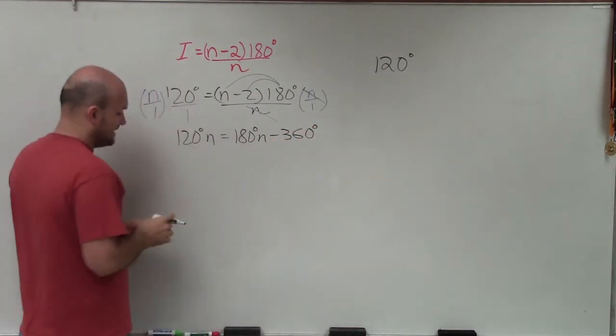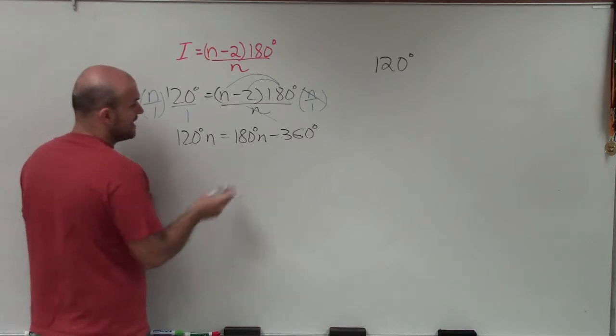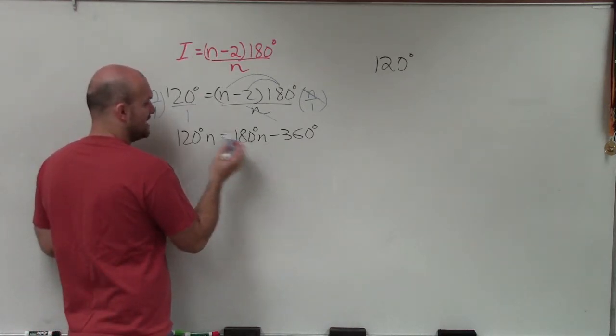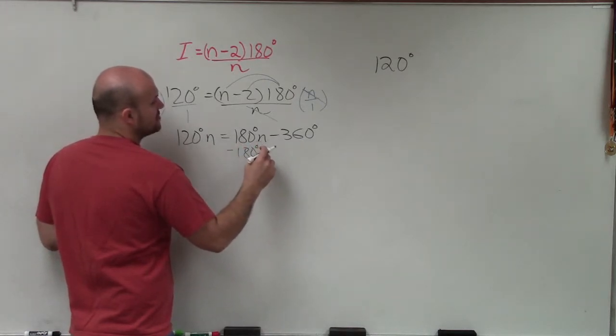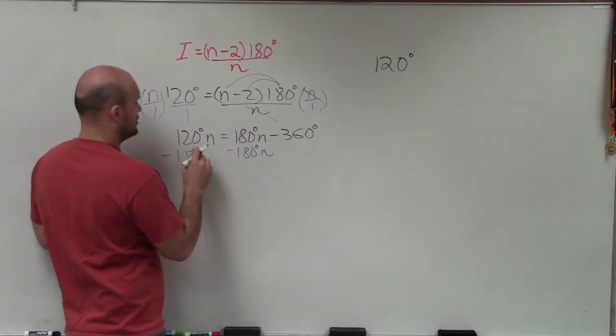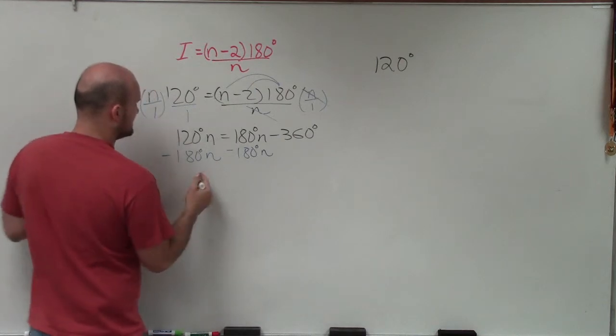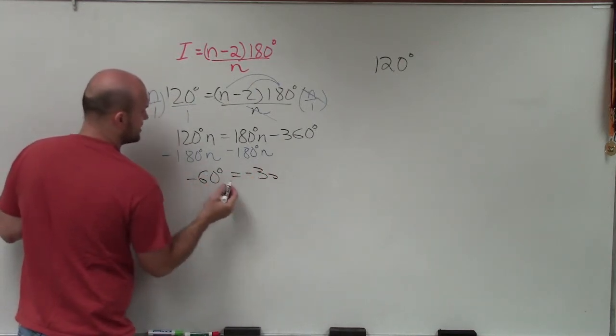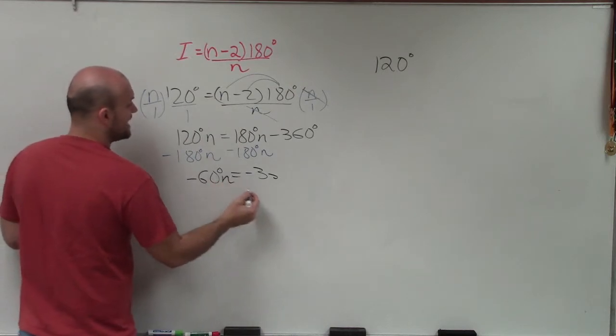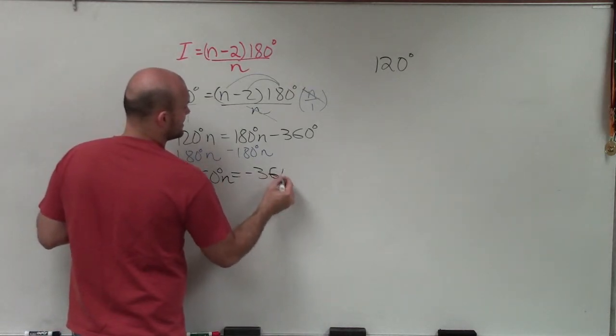So now I need to get the n's to the same side. So to do that, I simply need to get this n and this n on the same side. I'll choose to get them on the left side. So I'll use my division property of equality by subtracting 180 degrees n on both sides. Hence, therefore, I get negative 60 degrees n equals negative 360 degrees.